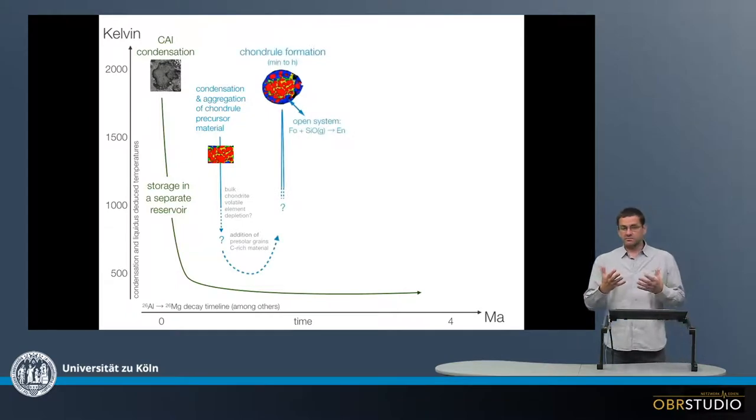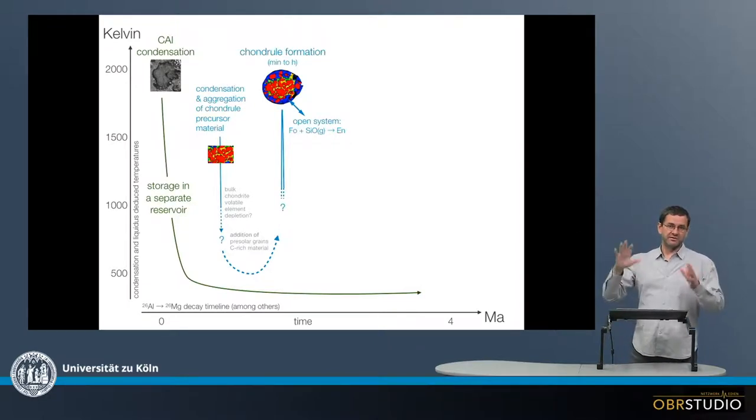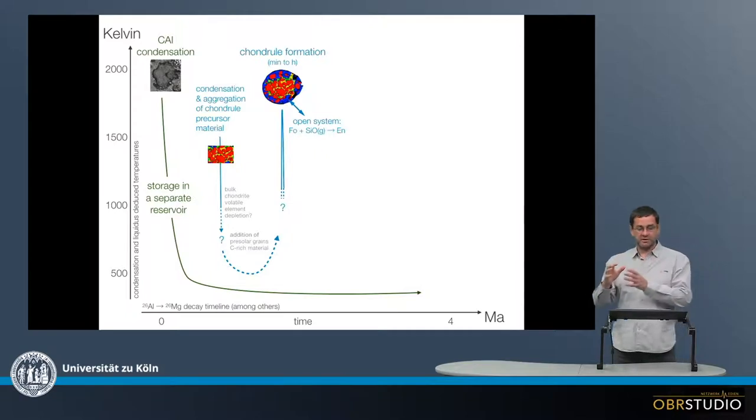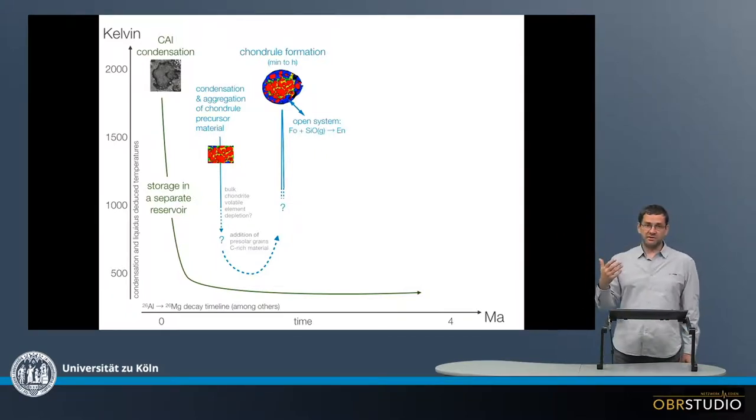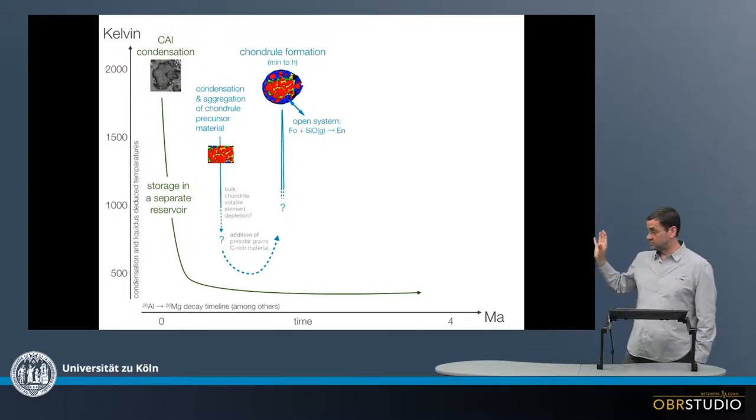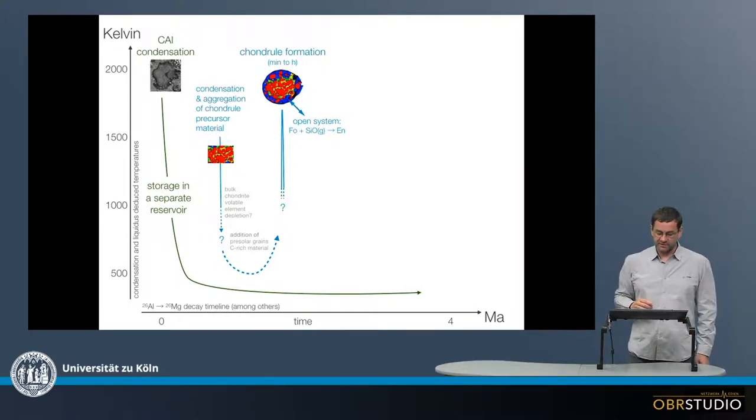After this was the enigmatic chondral formation event, which we know must have exceeded maybe 2000 Kelvin or something around 2000 Kelvin from the liquidus temperatures of the mafic chondrules. And this lasted only minutes to hours, which you also know from observation that the mesostasis is glassy, that there's high contents of the volatile sodium, and also from experiments that reproduce these textures and have a very short heating event.